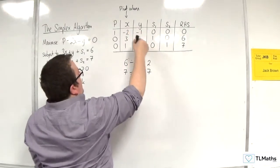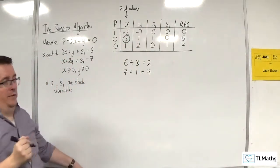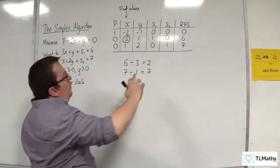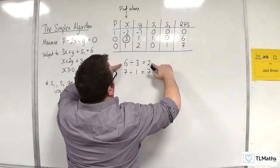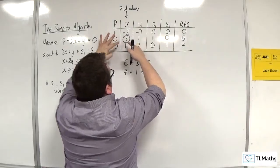So that one there is going to be our pivot. So of the two, that is the calculation that got us the smallest value. And so that is the one that will be considered the pivot in this case.